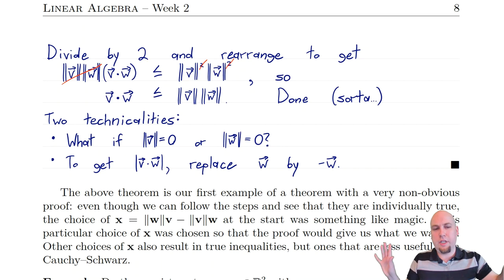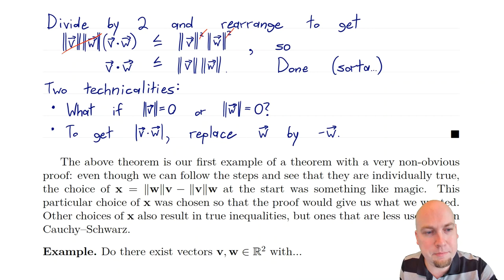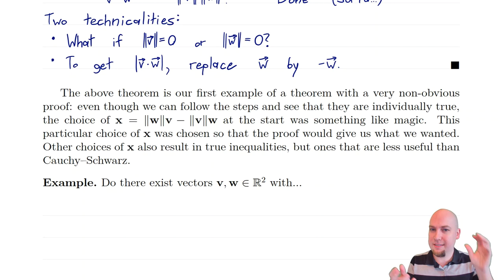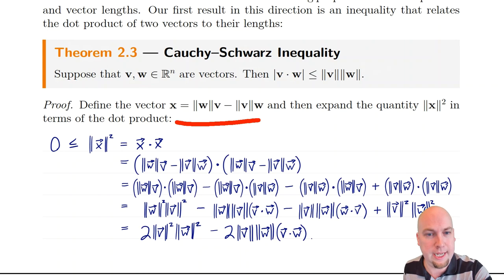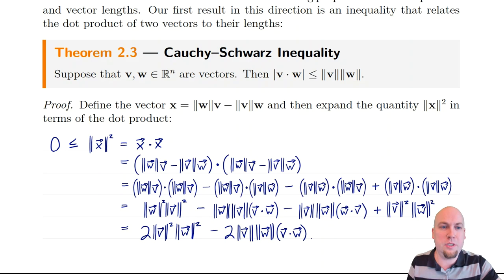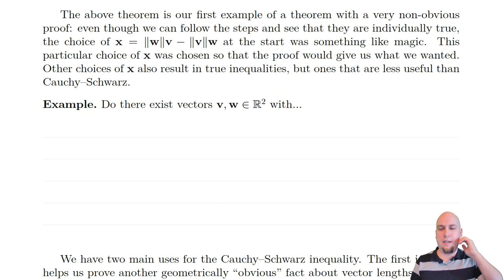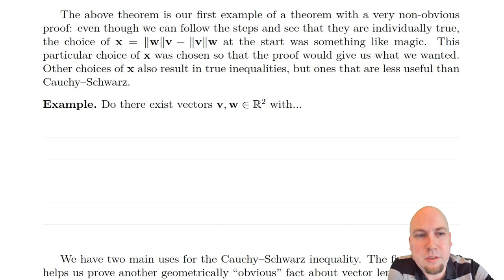I'm glossing over those details and not going into great depth because they're minor technicalities — I'm just pointing out that yes, they can be dealt with. The point of that proof is that your focus at this point in the course should be making sure you can follow the steps. Don't worry about whether you could come up with that proof yourself — that's not expected of you. There's a magic step at the start where we introduce x and consider that particular quantity. Why did people do that? Because they stared at this problem for a really long time and finally found a method that works.